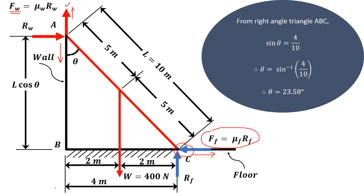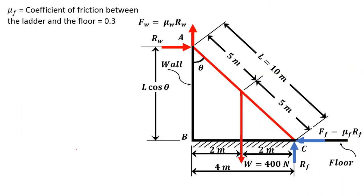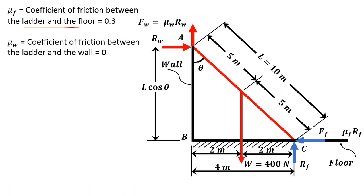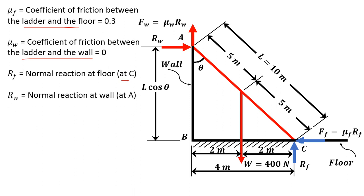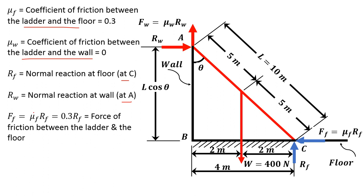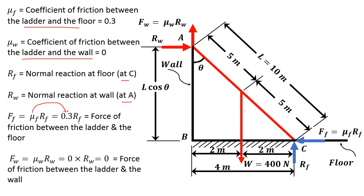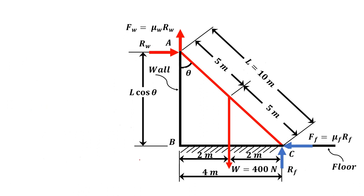To summarize the terms: mu_F is 0.3, the coefficient of friction between the ladder and the floor; mu_W is 0, the coefficient of friction between the ladder and the wall since the wall is smooth. R_F is the normal reaction at the floor at point C; R_W is the normal reaction at the wall at point A. F_F equals mu_F times R_F, which is 0.3 times R_F. F_W equals mu_W times R_W, and since mu_W is 0, F_W equals 0.